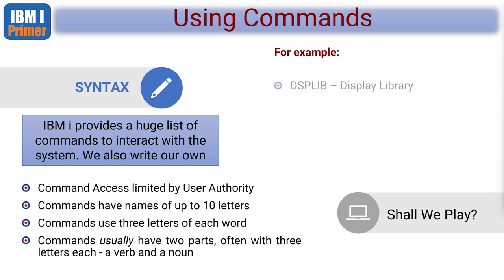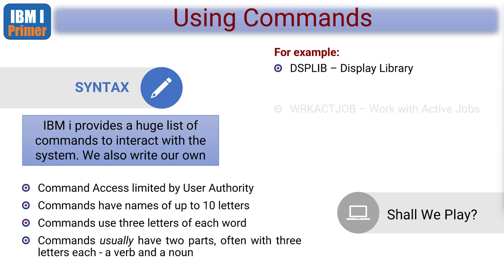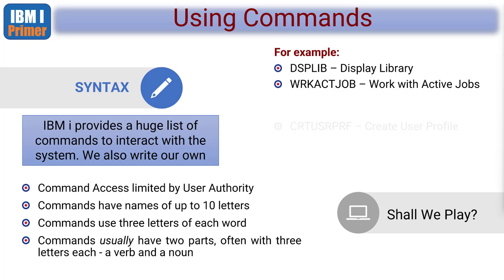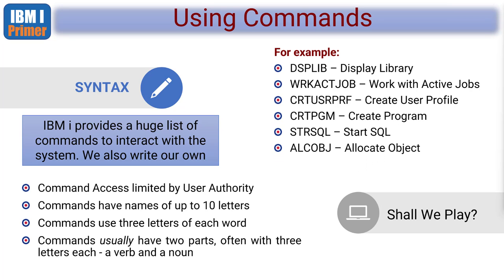Commands usually have two parts, often with three letters each - a verb and a noun: display something, end something, start something, work with something. For example: DSPLIBM is display library, WRKACTJOB is work with active jobs. Jobs are the sessions and streams running on the machine. To create a user profile that would be CRTUSRPRF.